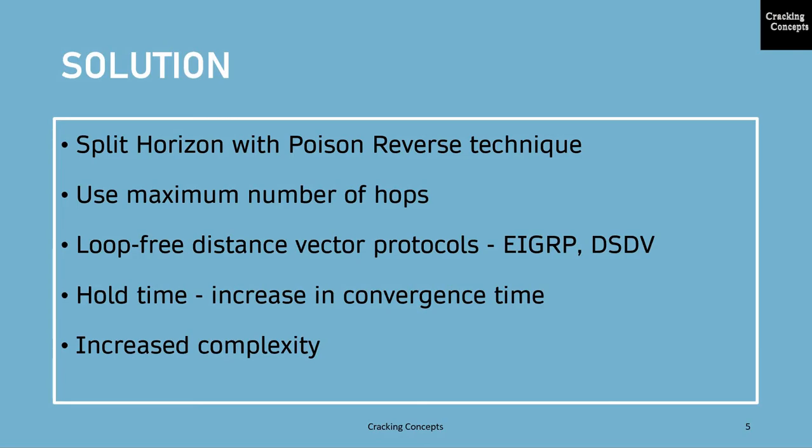Some partial solutions are available. Routing information protocol, which is an example of distance vector routing protocol, uses split horizon with poison-reverse technique to reduce the chance of forming loops and uses a maximum number of hops to counter the count to infinity problem. These measures avoid the formation of routing loops in some, but not all the cases.